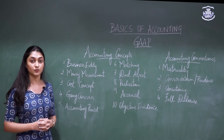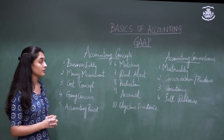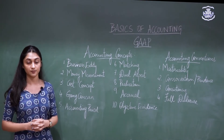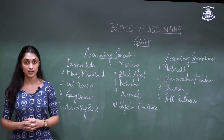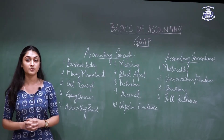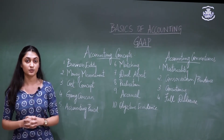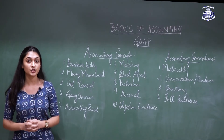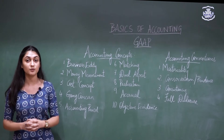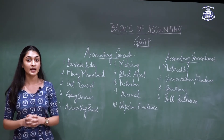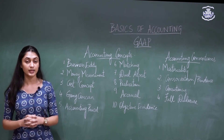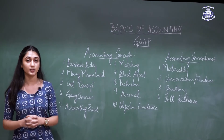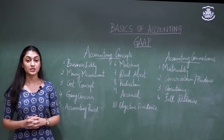We will now look into the accounting conventions. The first accounting convention is the convention of materiality. The convention of materiality states that only material items and transactions are to be recorded in the books of accounts. If an item or transaction is in a position to influence the decisions taken by the end users on the financial position of the organization, then such items and transactions will be considered material.